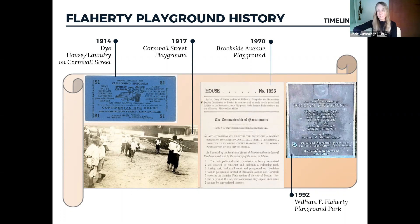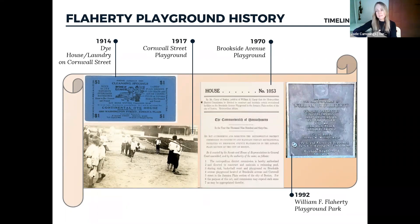Fast forwarding to 1970, the Cornwall Street playground became the Brookside Avenue playground. Everyone was aware of the need to really provide a space for kids, and at that time they were proposing a swimming pool, a skating rink, a basketball court, and a playground. Not all of these elements ended up on the site, but this image is a great example of why it's important to dream right now — to think about what you would identify as successful or in need, so we can work together to deliver the most we can for your park. And then finally, in 1992 through 1994, the park was developed into what it is today: the William F. Flaherty Playground Park.